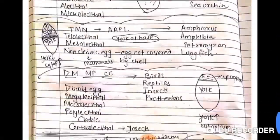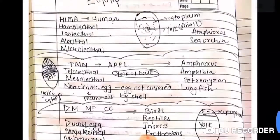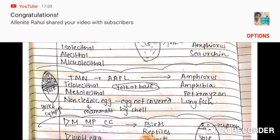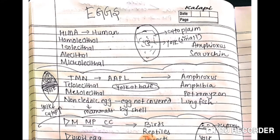Let's remember it all on one page. First the mnemonic HEMA: what is HEMA? It stands for homolecithal, isolecithal, alecithal or microlecithal. All these types are different. Homolecithal, isolecithal, alecithal and microlecithal occur in humans, amphioxus and sea urchin. Remember from HEMA to human, amphioxus and sea urchin.